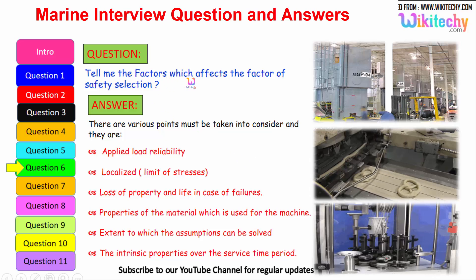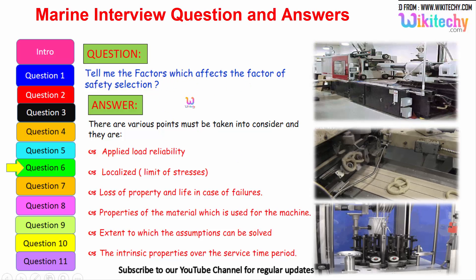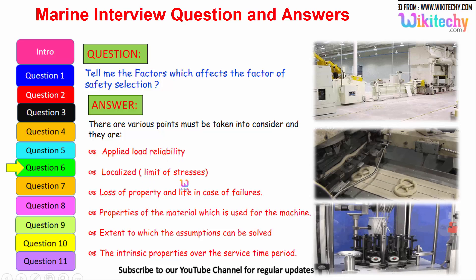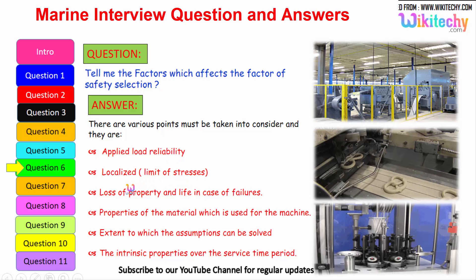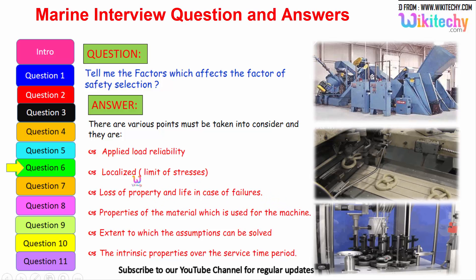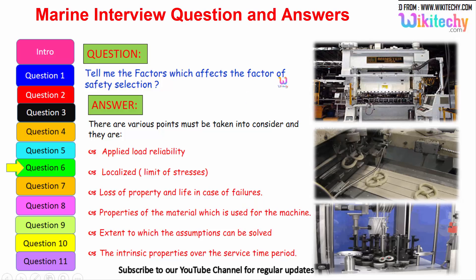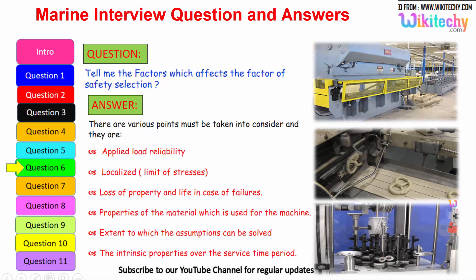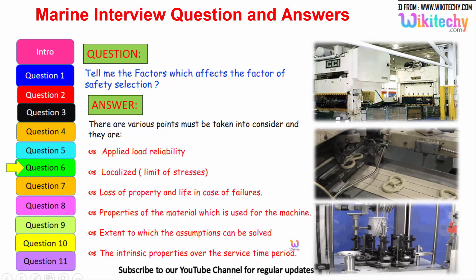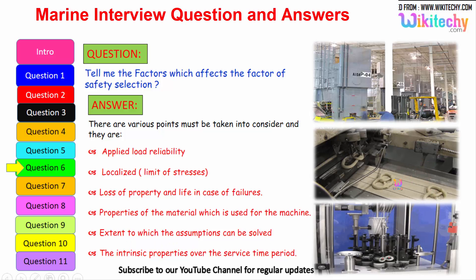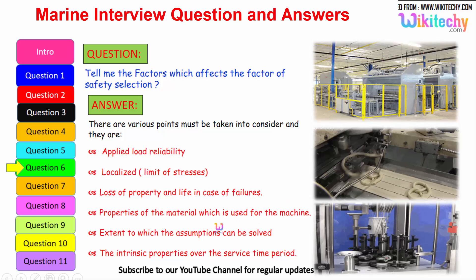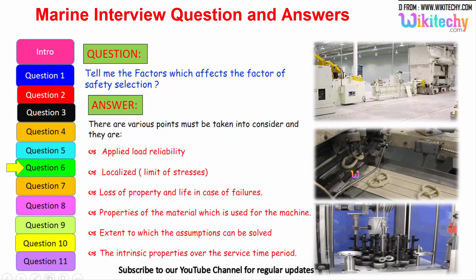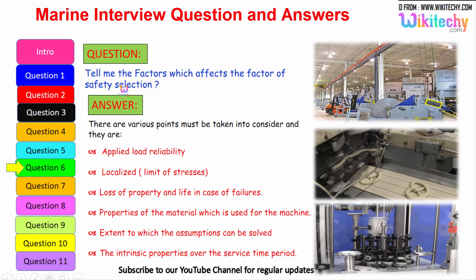Let us see the factors which affect the factor of safety selection. These include: applied load reliability; limit of stress thus localized; loss of property and life in case of failures — a very important factor; properties of the material used for the machine; extent to which assumptions can be solved, such as how much it will extend or compress; and the intrinsic property over the service time period, and how it will sustain — everything we need to consider for factor of safety selection.